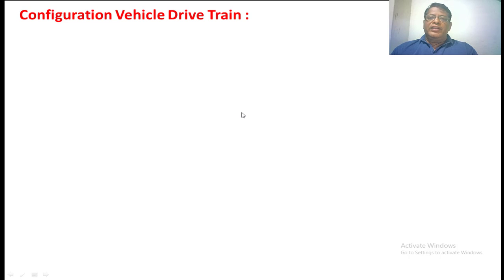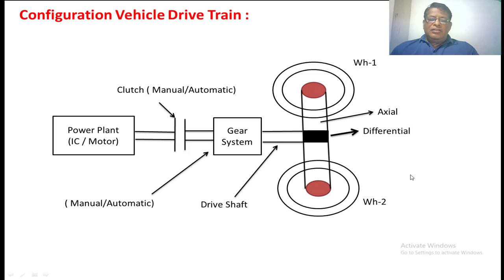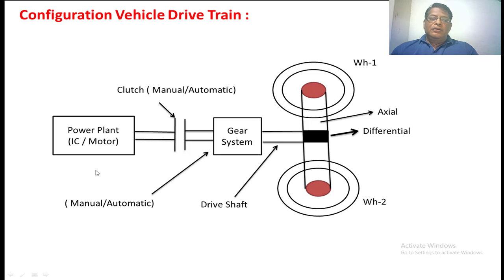Already in the last class we have seen the general configuration of a vehicle drivetrain. This is the power plant, which can give power to the transmission system, to the wheel, so that the vehicle will be moving on the road. When it comes to the power plant, there are two types of power generators: one is IC engine, another one is a motor. The main function of the clutch is that it makes a connection and disconnects the power plant with the transmission system whenever required. There are two types of clutches: one is manual clutch and another one is automatic clutch.